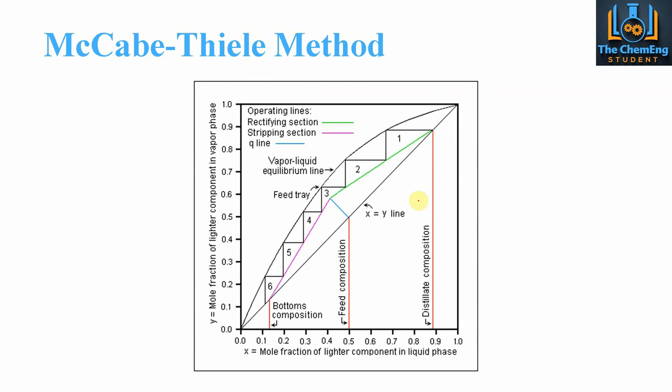Here we have the mole fraction of the lighter component in the liquid phase on the x-axis, and the mole fraction of the lighter component in the vapour phase on the y-axis. We have the x equals y diagonal line, and the vapour-liquid equilibrium curved line. This is the feed point — with a composition of 0.5 (50%) we draw straight up until we hit the x equals y operating line. After performing the mass and energy balances, we get the compositions of the bottoms and the tops.